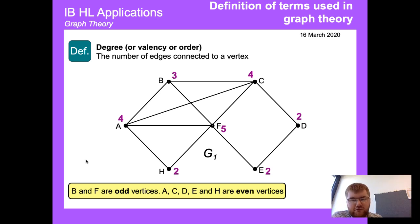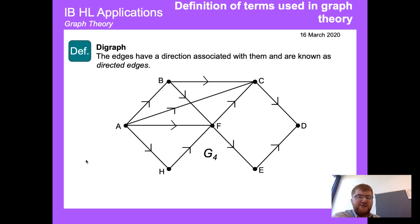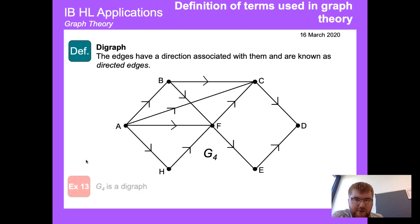A digraph, or directed graph, is one where the edges have a direction associated with them — known as directed edges. We have to consider the direction of the route more carefully. G4 is an example of a directed graph; 'digraph' is just the shortened form.